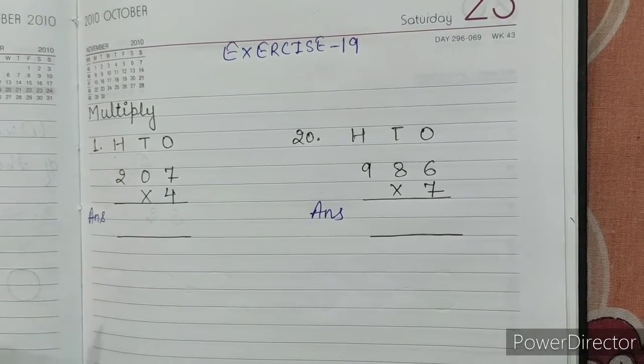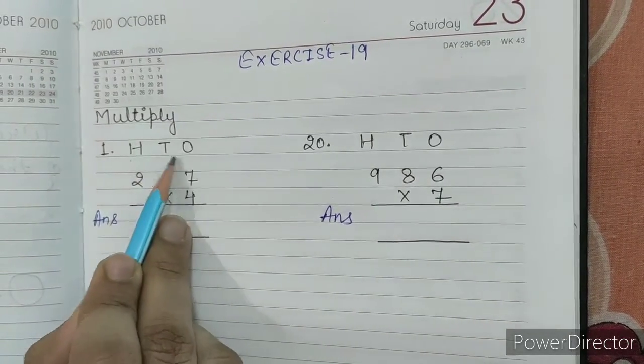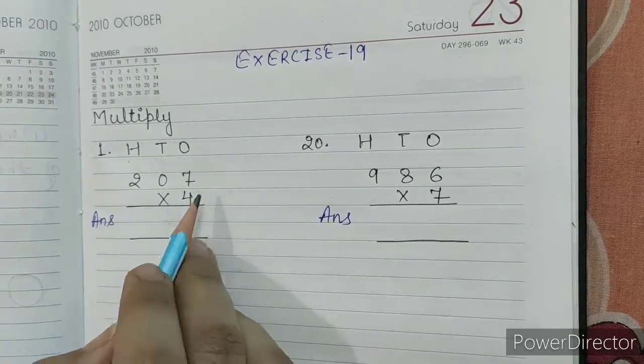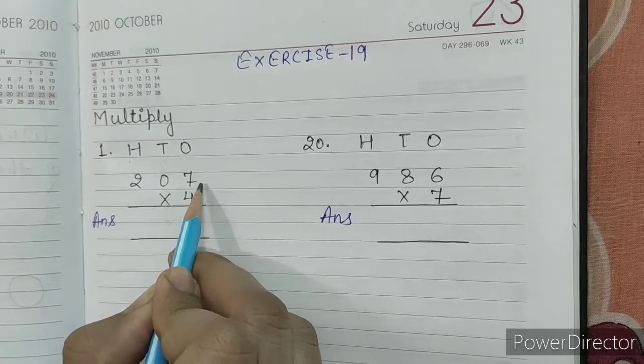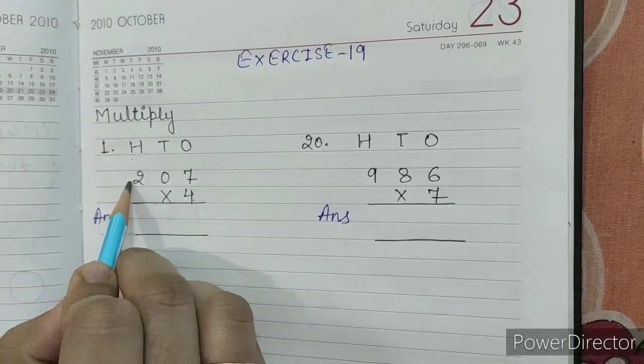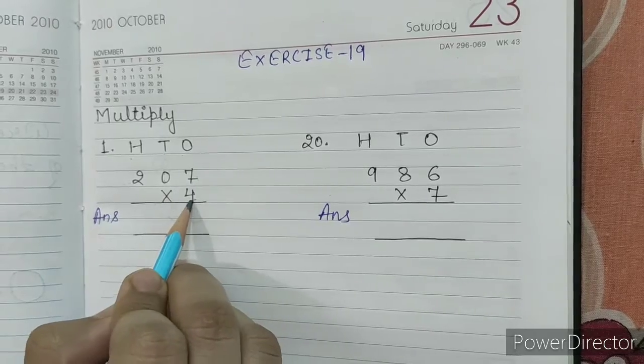Exercise 19. Multiply question number 1. Ones, tens, hundreds. 207 into 4. First of all, we will multiply 4 into 7. Then 4 into 0. Then 4 into 2.